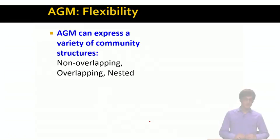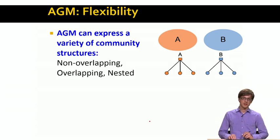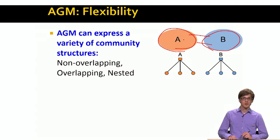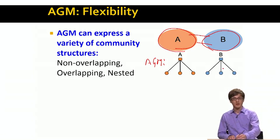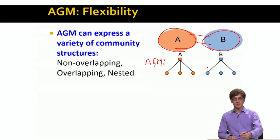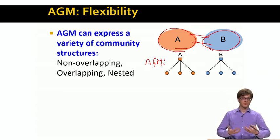What is good about the affiliation graph model is that it is able to express a variety of different network structures. For example, if I want non-overlapping social communities or clusters, I can represent this with community node A and community node B, where one set of nodes is a member of A and another set is a member of B. If a pair of nodes has no community in common, they link with a small probability epsilon, so we still get a few edges crossing the two communities.